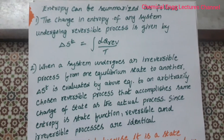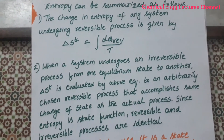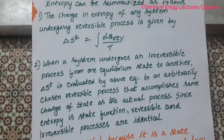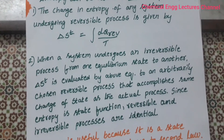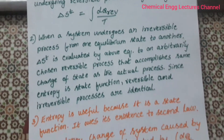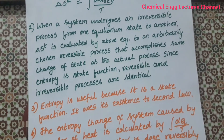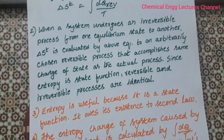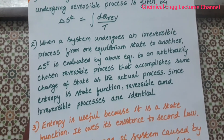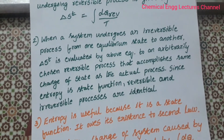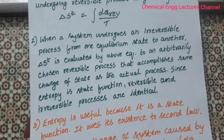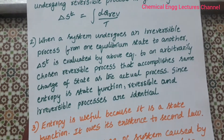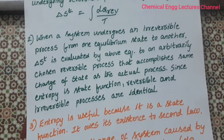This property, entropy, can be explained by the following steps. The change in entropy of any system undergoing a reversible process is given by delta ST equal to the integral of DQ reversible by T. When a system undergoes an irreversible process from one equilibrium state to another, delta ST is evaluated by applying the above equation to an arbitrarily chosen reversible process accomplishing the same change of state. Since entropy is a state function, the entropy change is identical for reversible and irreversible processes.